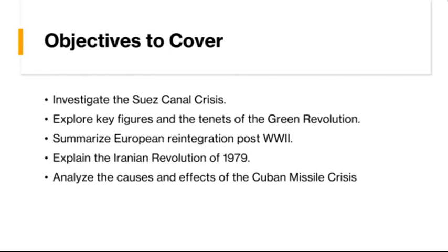First we'll be taking a look at the Suez Canal Crisis of 1956, which was a pivotal episode in the struggle for control over strategic waterways. The crisis unfolded when Egyptian President Jamal Abdel Nasser nationalized the Suez Canal, sparking a military intervention by Britain and France. The conflict, which exposed the declining power of colonial empires and the rise of nationalism in the post-colonial world, ultimately resulted in a humiliating defeat for the aggressors and bolstered Nasser's stature as a leader of the Arab world.